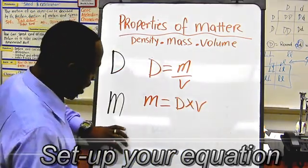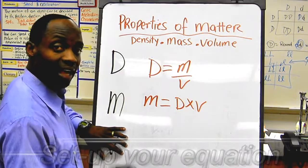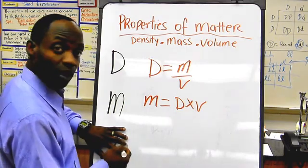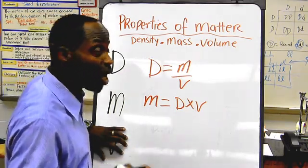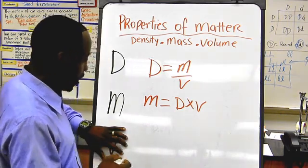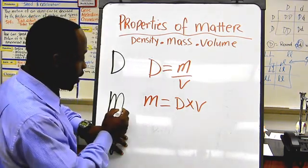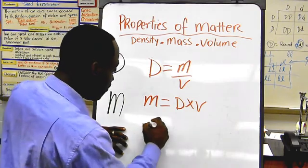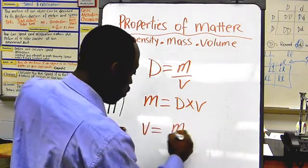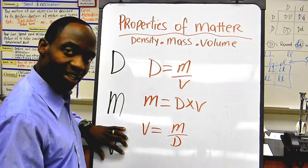Now, I come down here and I do the same thing. I cover up. I'll cover up my V, and I'm looking for V. But what do I need to do? If M is always on top, then that means my equation is going to be V equal what? M over D. There you got it.